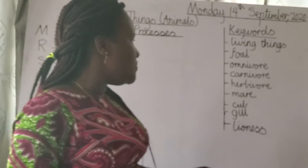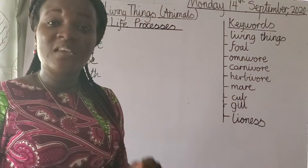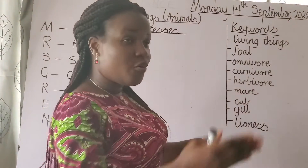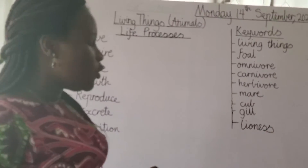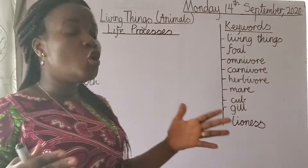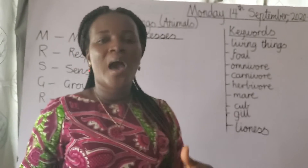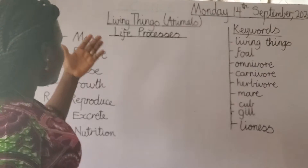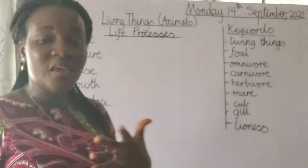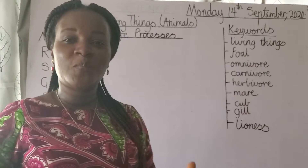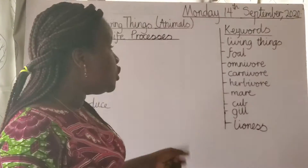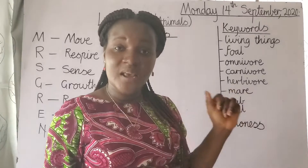We also have omnivores — animals that eat both plants and meat. An example is the bear; the crayfish is also an omnivore. Now we are done with today's lesson. We have looked at the reasons why animals are living things: they can move, respire, sense, grow, reproduce, excrete, and feed. I expect you to learn these keywords — we will have a dictation the next time we have our zoom meeting.